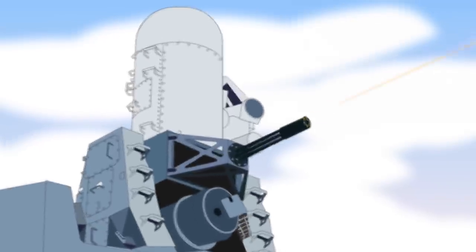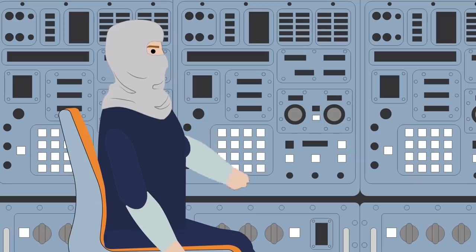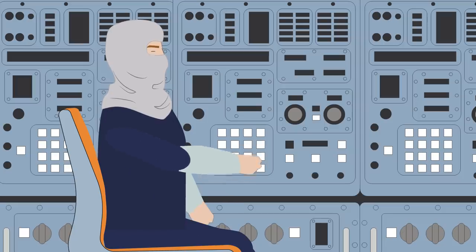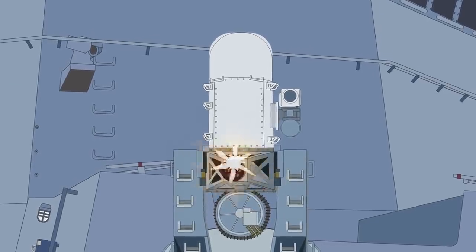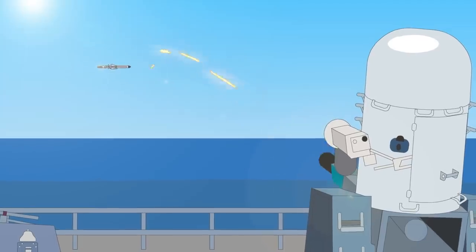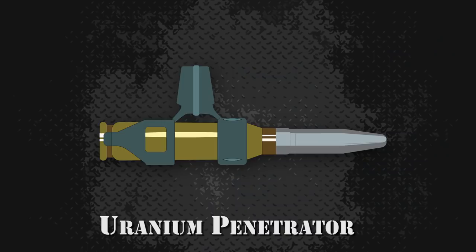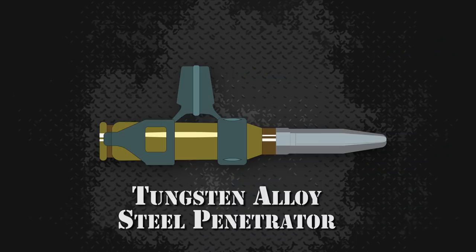The M61 Vulcan cannon used on the Phalanx is an electronically controlled, pneumatically driven six-barrel cannon firing the 20x102mm round with electric primers. It fires two types of armor-piercing rounds, one with a depleted uranium penetrator and another with a tungsten or tungsten alloy steel penetrator.